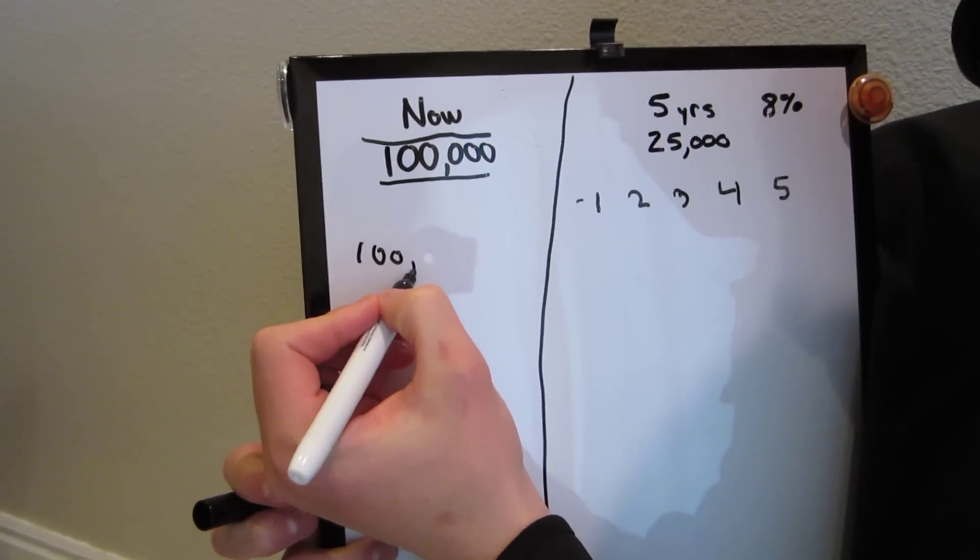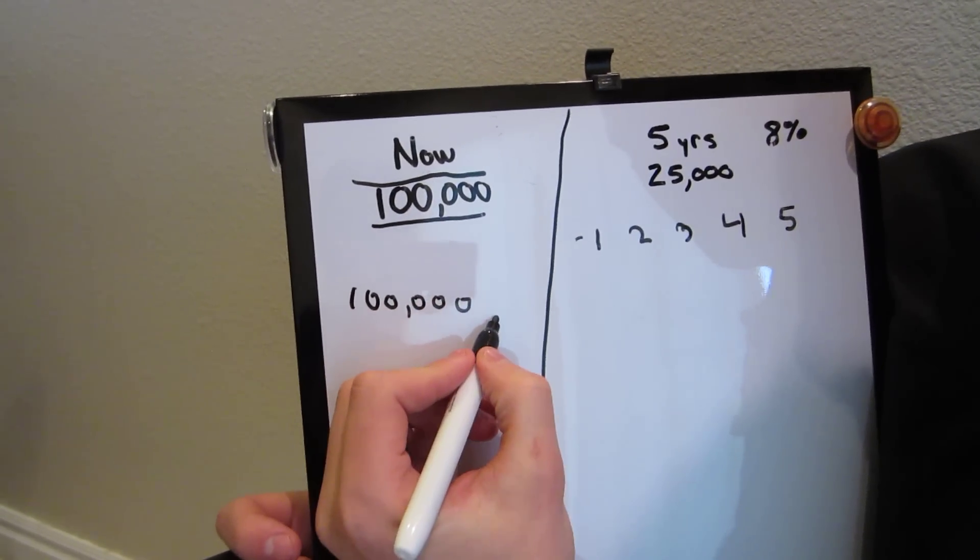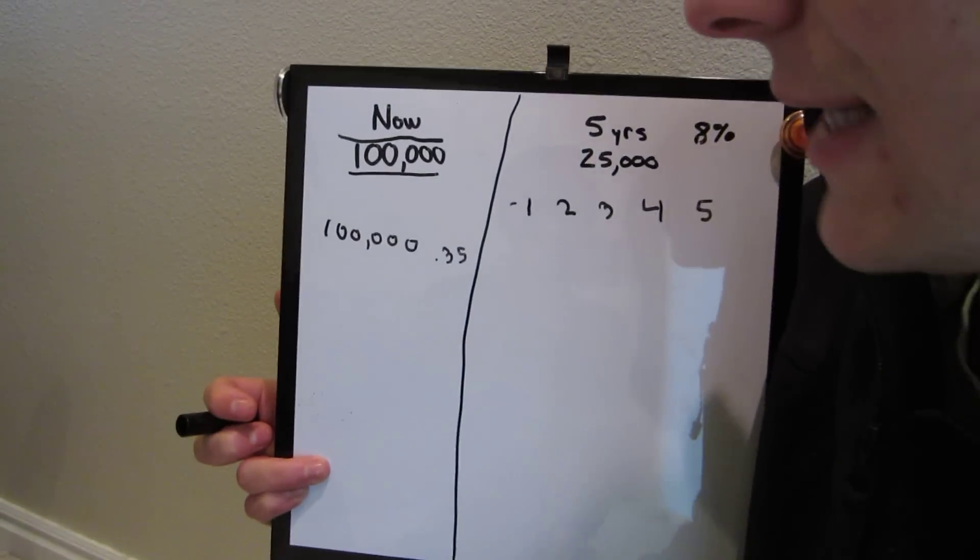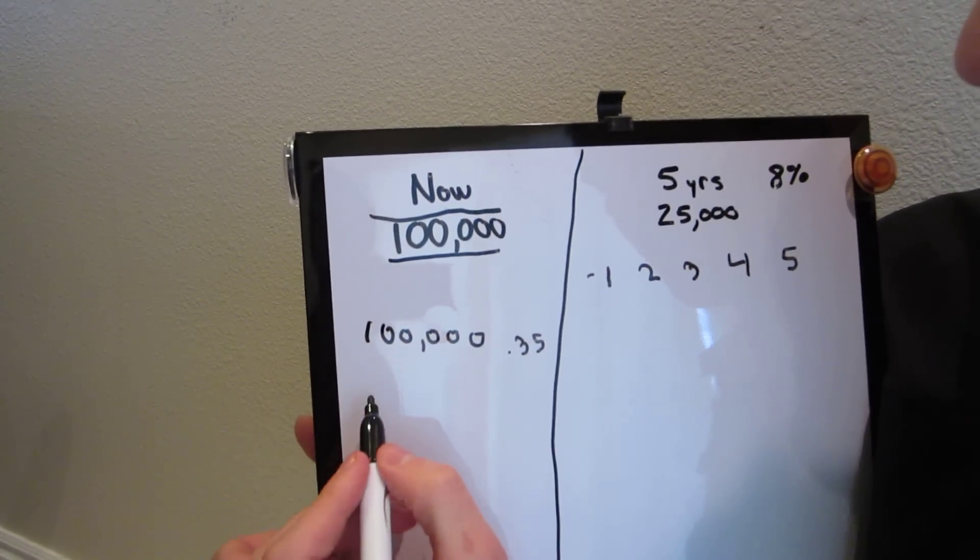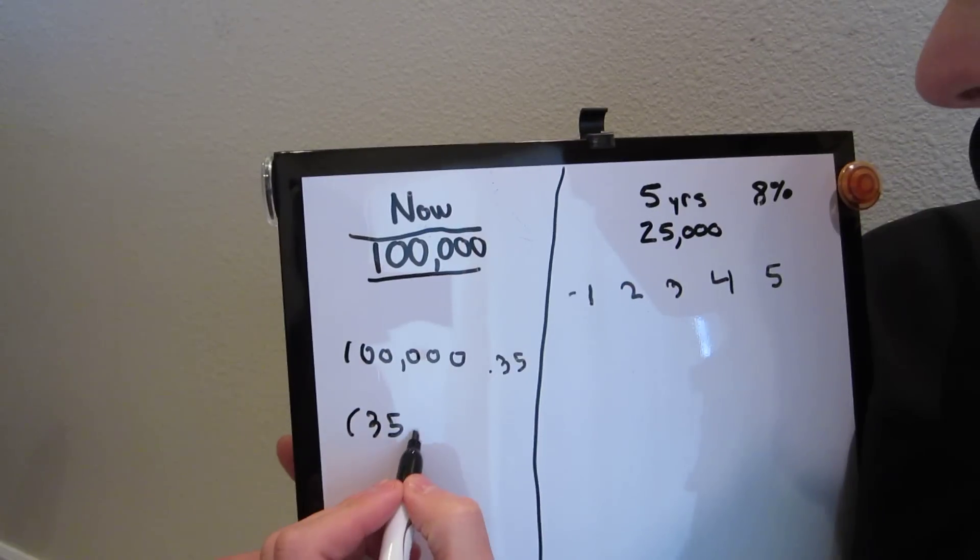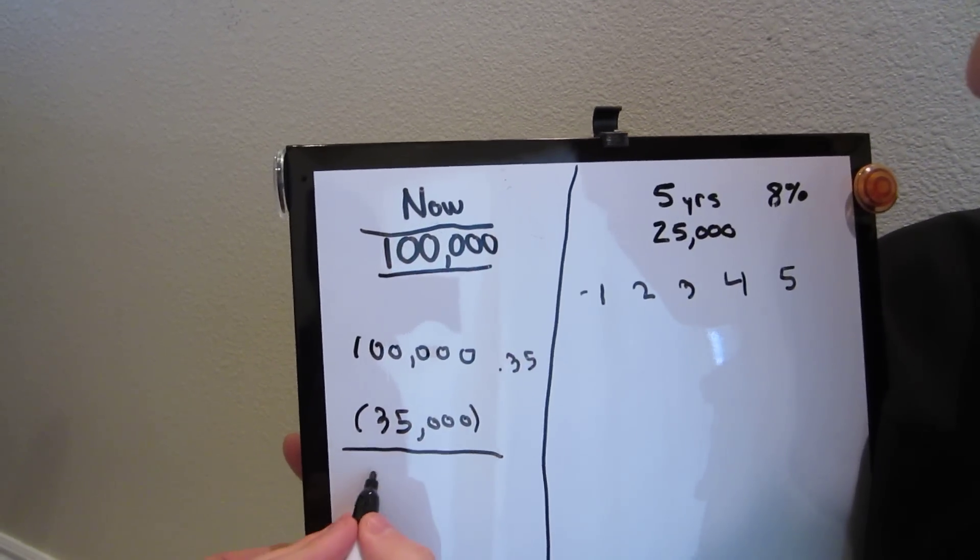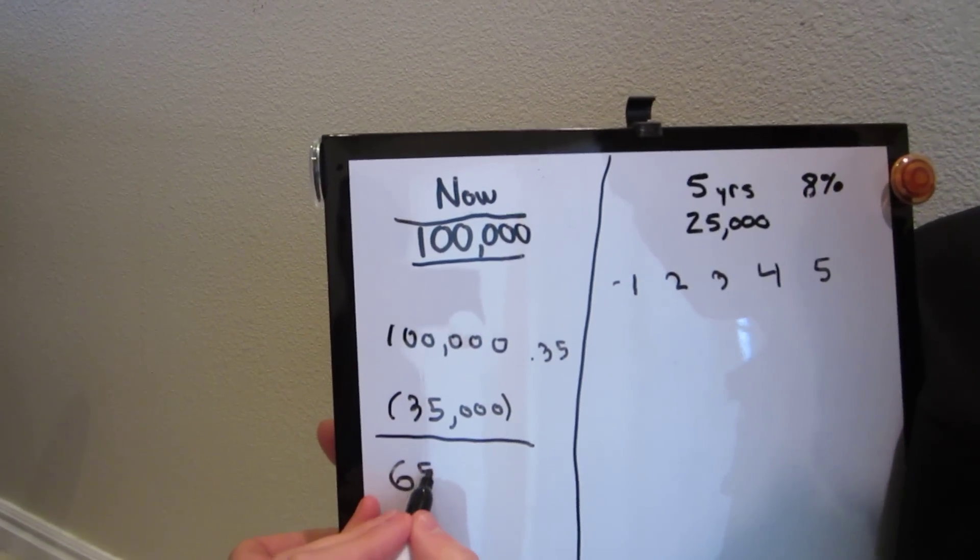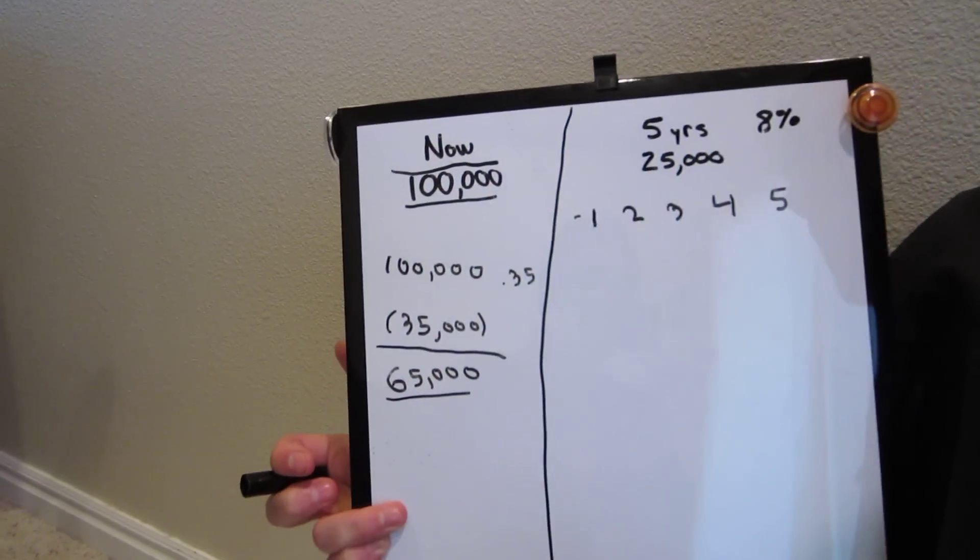So we can calculate what we'd get right now. We do $100,000, and we multiply it by 0.35, and that'll give us what we pay in taxes. That'll end up being $35,000 in taxes. So you subtract $35,000, and you end up with $65,000. That is going to be what you get if you decide to take the payment right now.